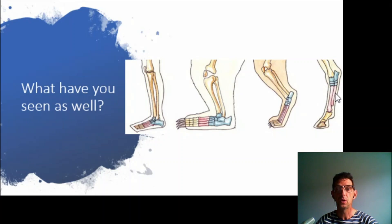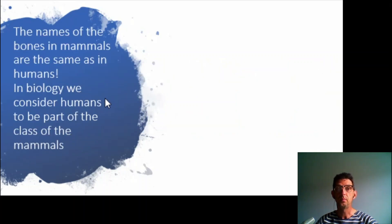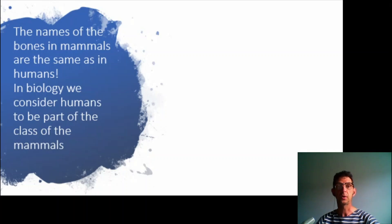It also has the tarsals and the metatarsals in red, and the phalanges in yellow. So the names of the bones in mammals are the same as the bones in humans, because in biology we consider them to be part of the class of mammals — so animals, vertebrates.